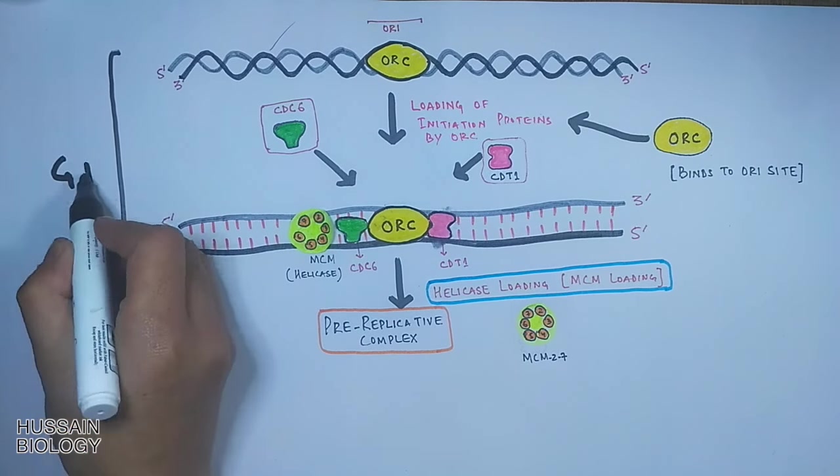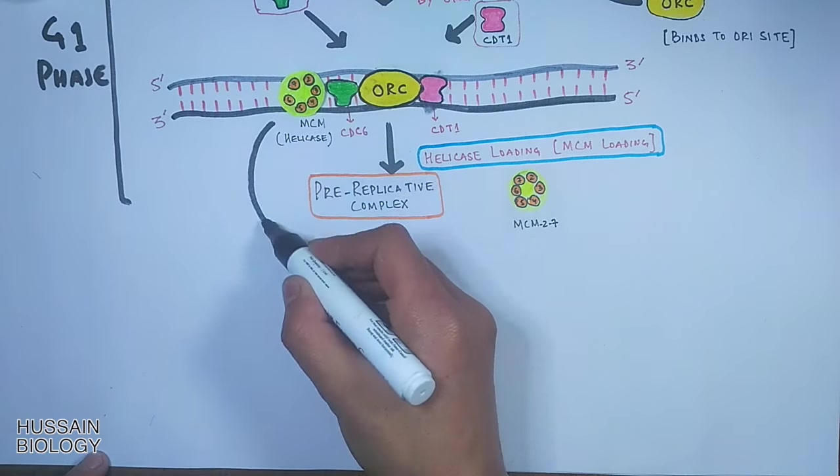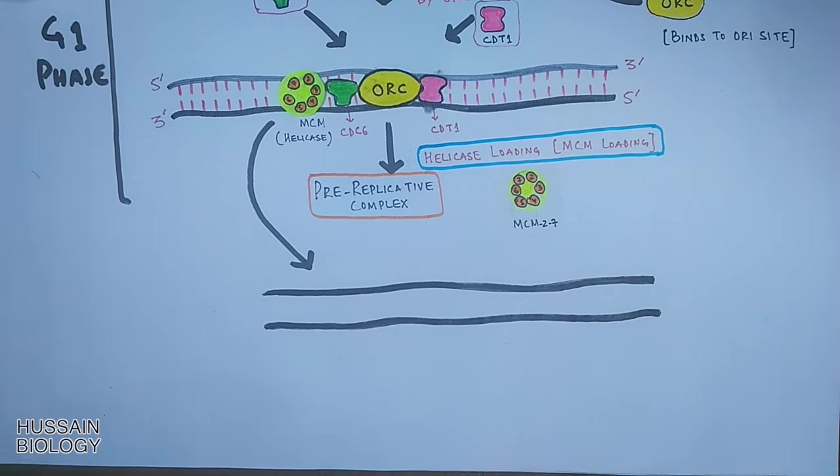So this forms us the pre-replicative complex and these all events are going in the G1 phase of cell cycle. But till now the mcm 2 to 7 complex does not show any helicase activity, it's inactive yet.